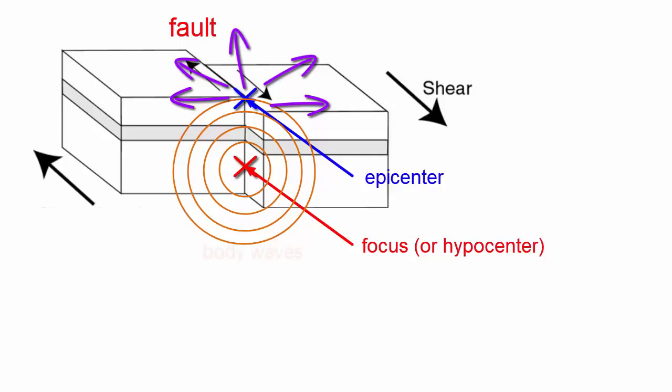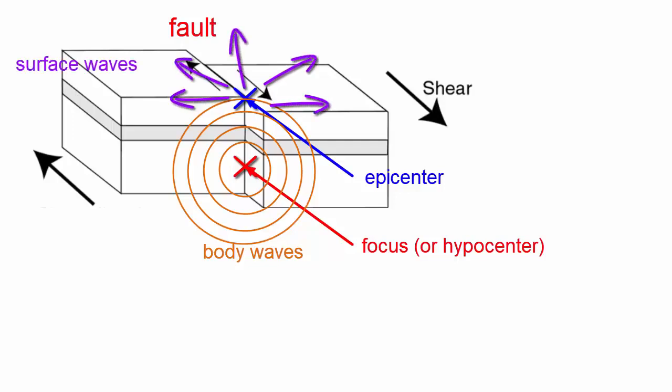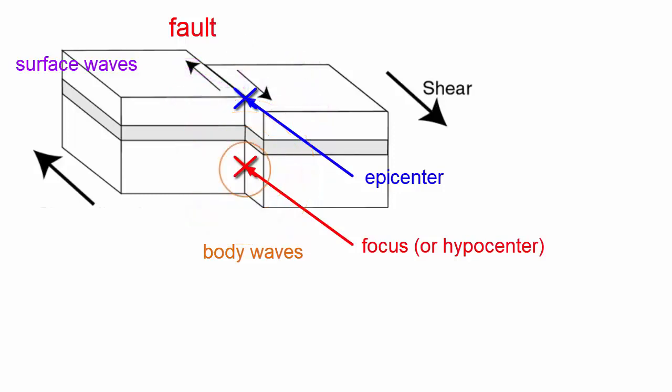We call the waves that travel through the solid rock body waves, and these can travel all the way through the Earth to be picked up by seismic stations on the other side of the planet. When these body waves arrive at the surface, they will generate surface waves, which move outward from the epicenter in all directions along Earth's surface, the boundary between the rock surface and the atmosphere or water.